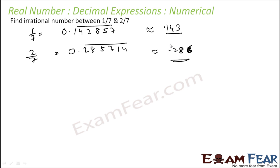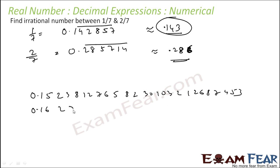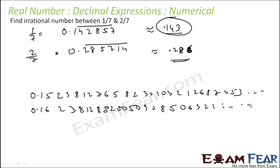We have to find an irrational number between these two numbers. Between two rational numbers, there are an infinite number of rational numbers. Similarly, between two rational numbers there are also infinite irrational numbers. For example, one number can be 0.15 followed by any non-repeating sequence, or 0.16 with some non-repeating digits, or 0.17 with some number. These will all be irrational numbers — you can have an infinite number of irrational numbers between these two points. But for exam purposes, we can just write two irrational numbers.